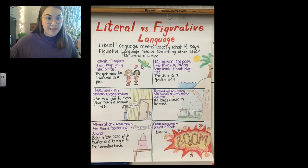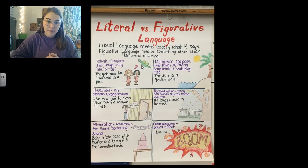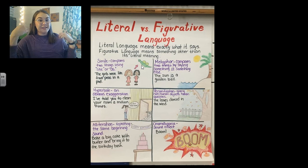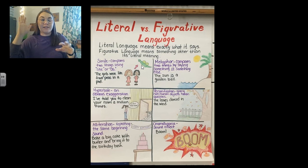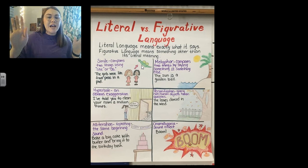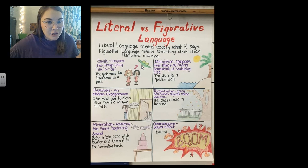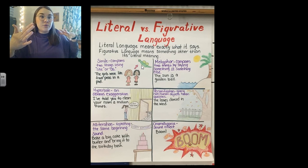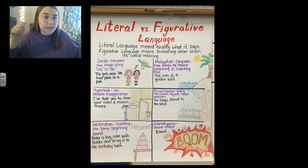A hyperbole is an exaggerated statement — obviously exaggerated. You fourth graders love using hyperboles all the time, like I'm starving to death. No, you're not starving to death — you're exaggerating. So just like this example I use all the time: I've told you to clean your room a million times. No, your mom didn't actually tell you a million times. She's just saying, I have told you to do this so many times — would you please just get it done?